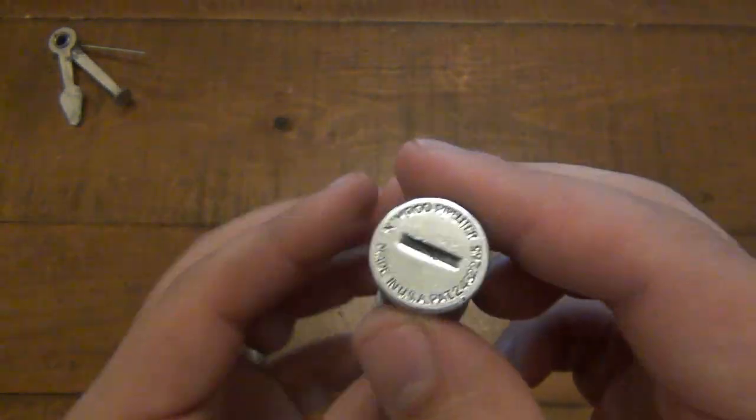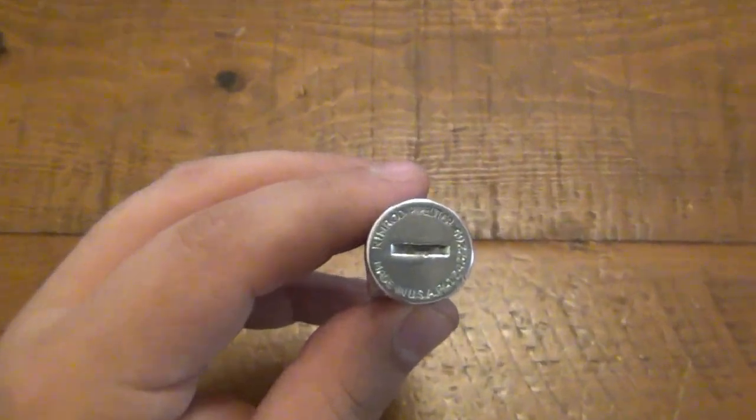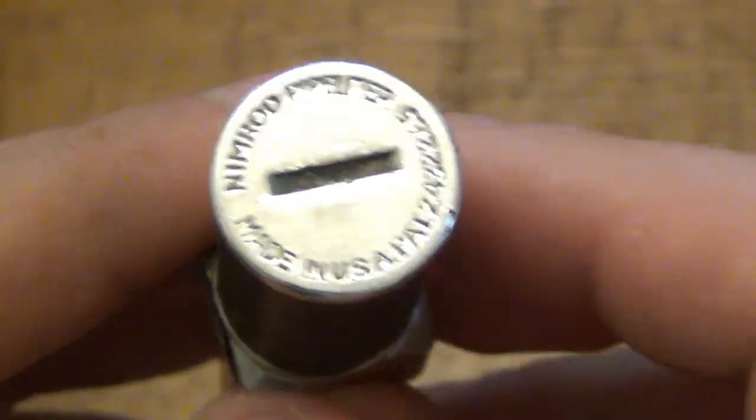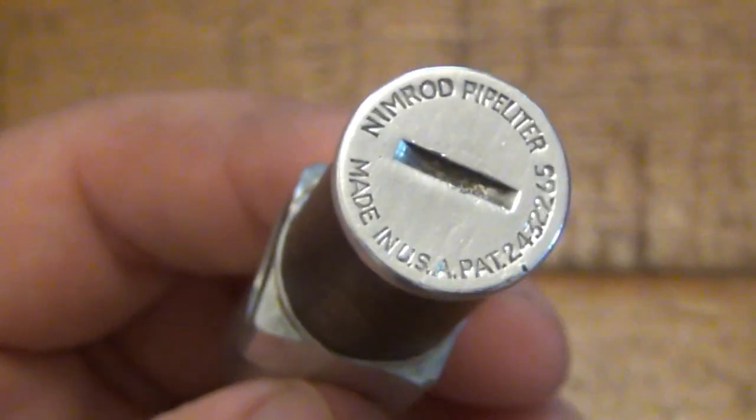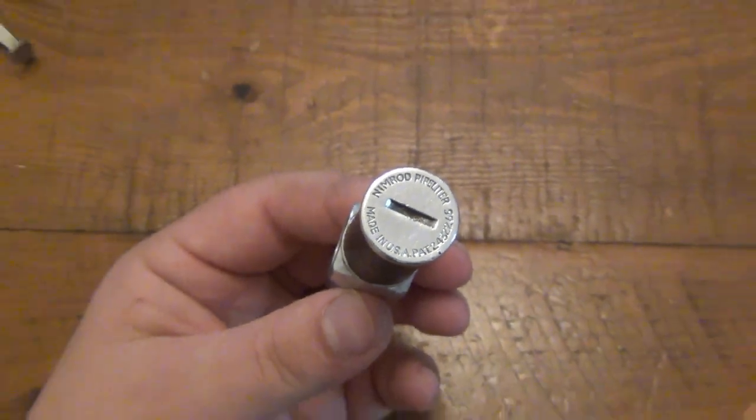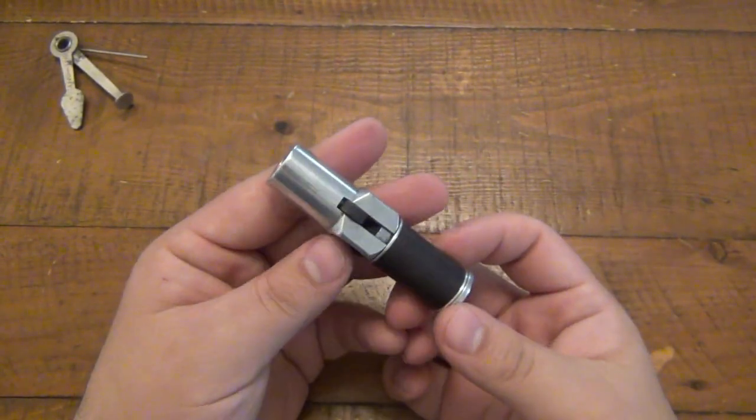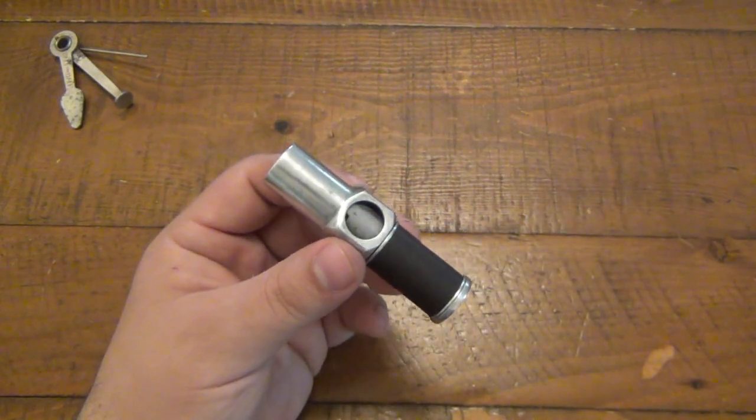This is a Nimrod brand pipe lighter. If I zoom in on the bottom here you can see the markings. It says Nimrod pipe lighter, made in USA and there's a patent number here. This patent was approved in 1947 I believe, and these were very popular in the 50s and 60s and some people still use them today.